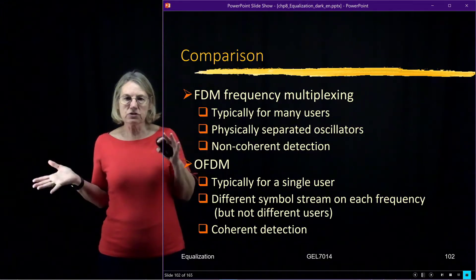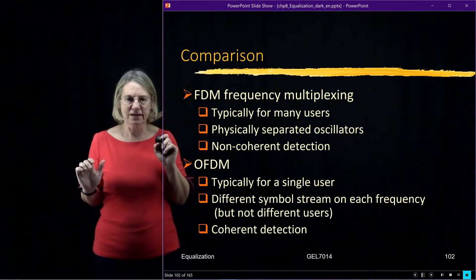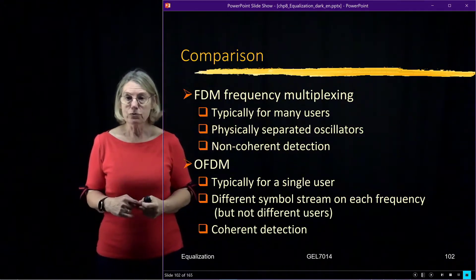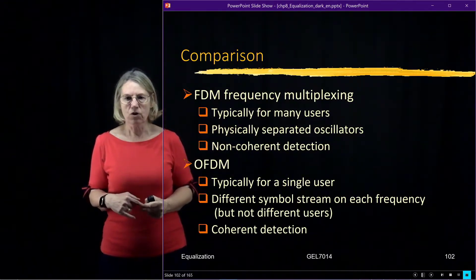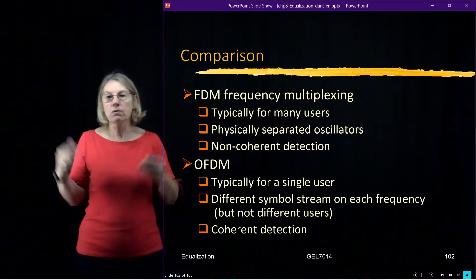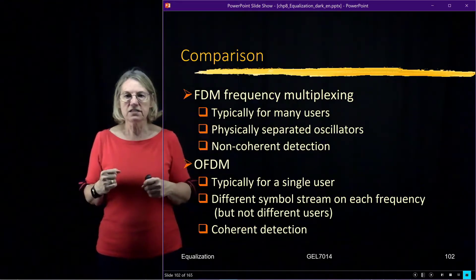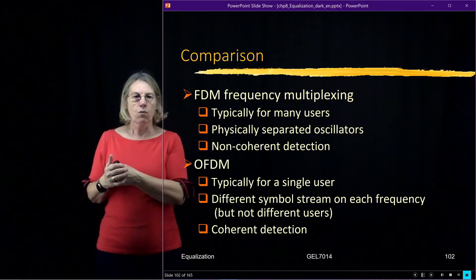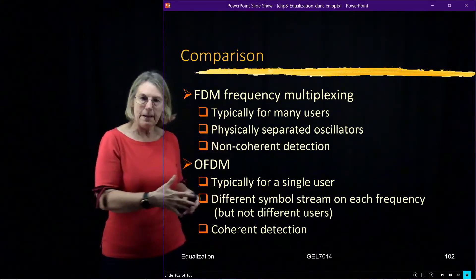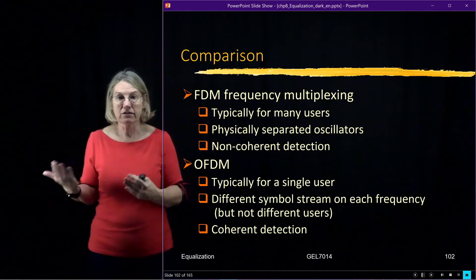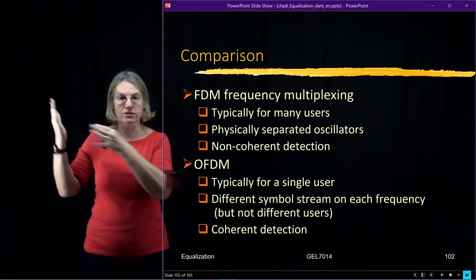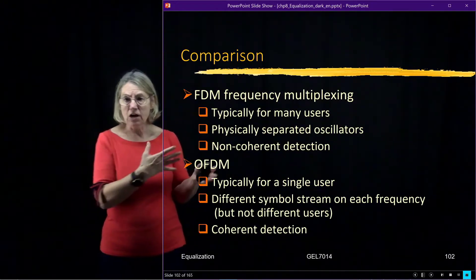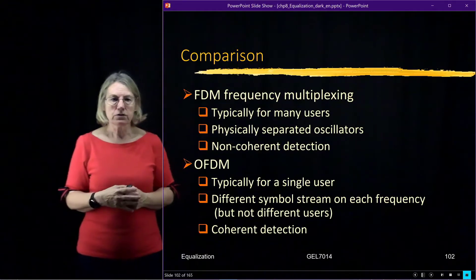First, I'm going to distinguish between frequency division multiplexing and OFDM. Frequency multiplexing is typical when we have many users, like radio stations. We give each radio station a different frequency, multiplexing across frequencies. Even in cellular systems, certain regions are given certain frequencies. One user uses one frequency, another user uses a different frequency, and these users are typically physically separated. In FDM, you might use non-coherent detection, though it doesn't have to be.